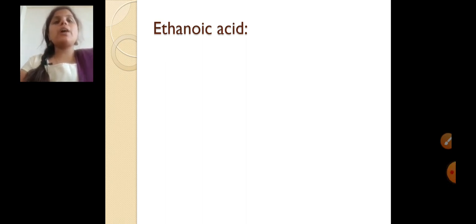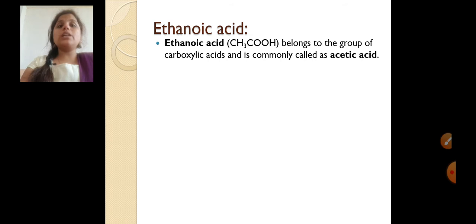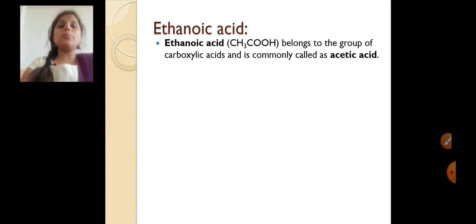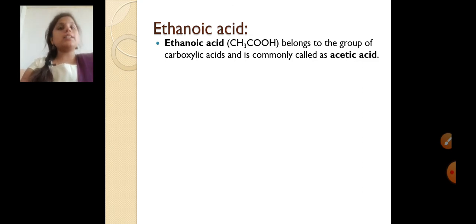Next, we are going to talk about ethanoic acid. What do we mean by ethanoic acid? Ethanoic acid is commonly called acetic acid. The formula of ethanoic acid is CH3COOH. COOH is the carboxylic acid group, and CH3 comes from ethane, which is why it is called ethanoic acid.